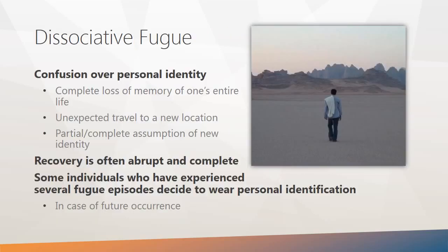Another type of dissociative amnesia is called dissociative fugue, and this is rare. It involves confusion over one's personal identity due to the complete loss of memory of one's entire life. An individual with dissociative fugue suddenly and unexpectedly takes physical leave of their surroundings and sets off on a journey of some kind. These journeys can last for hours or even several days or months, and individuals have traveled over thousands of miles. Someone in a fugue state is unaware of or confused about their identity, and in some cases will assume a new identity, although this tends to be the exception. Recovery is often abrupt and complete. Some individuals who have experienced several fugue episodes decide to wear personal identification, just in case this happens again.